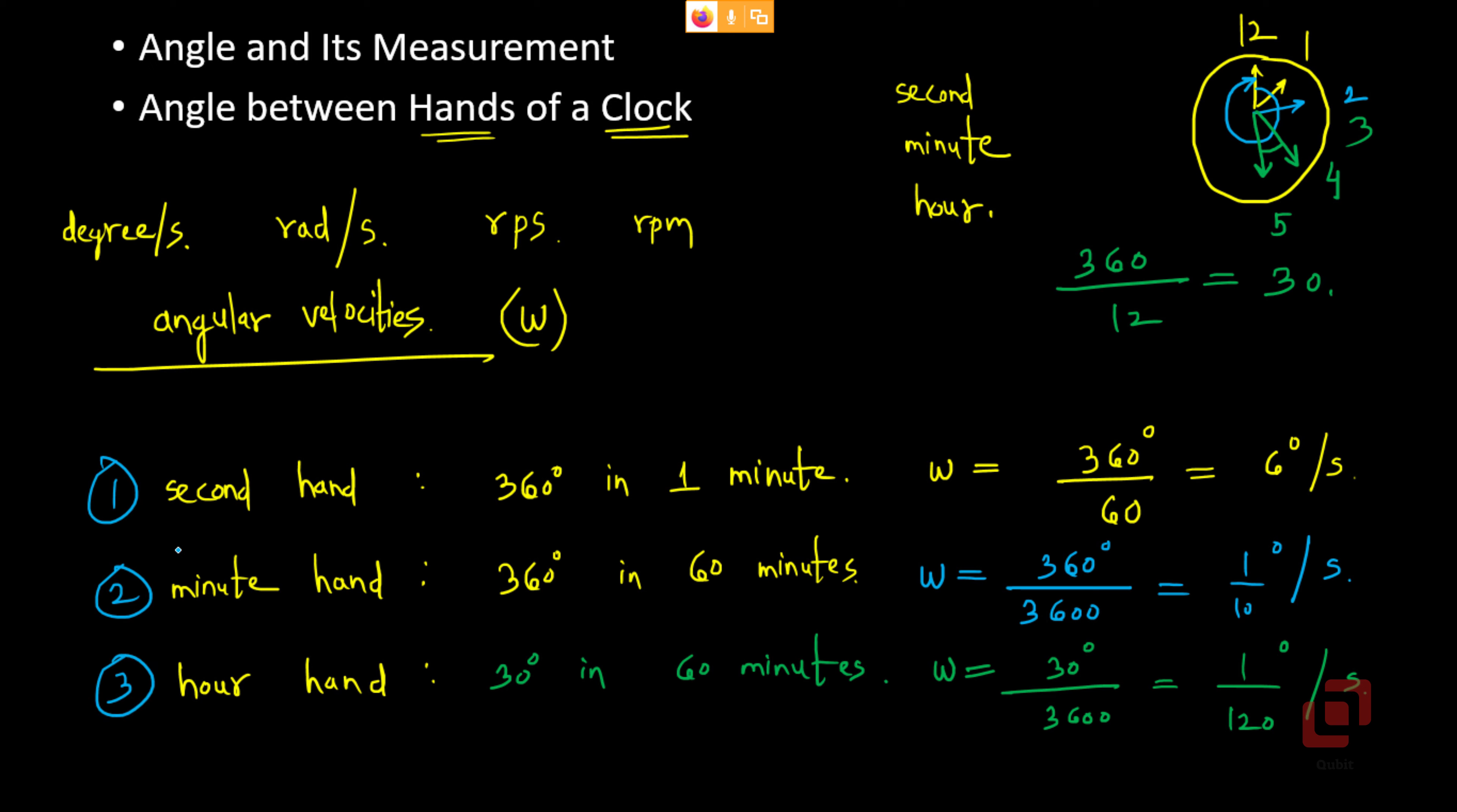So these are the three angular velocities of three different hands of a clock. And based on this, you can find angle between the minute hand and hour hand at any given time.